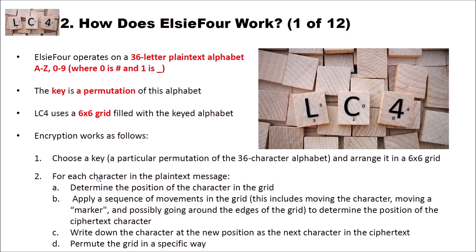And then you repeat for each character in the plaintext message. First, determine the position of the character in the grid. Then apply a sequence of movements in the grid. This includes moving the character, moving a so-called marker, and possibly going around the edges of the grid to determine the position of the ciphertext character. Then write down the character at the new position as the next character in the ciphertext. And finally, and here it becomes polyalphabetic, permute the grid in a specific way.